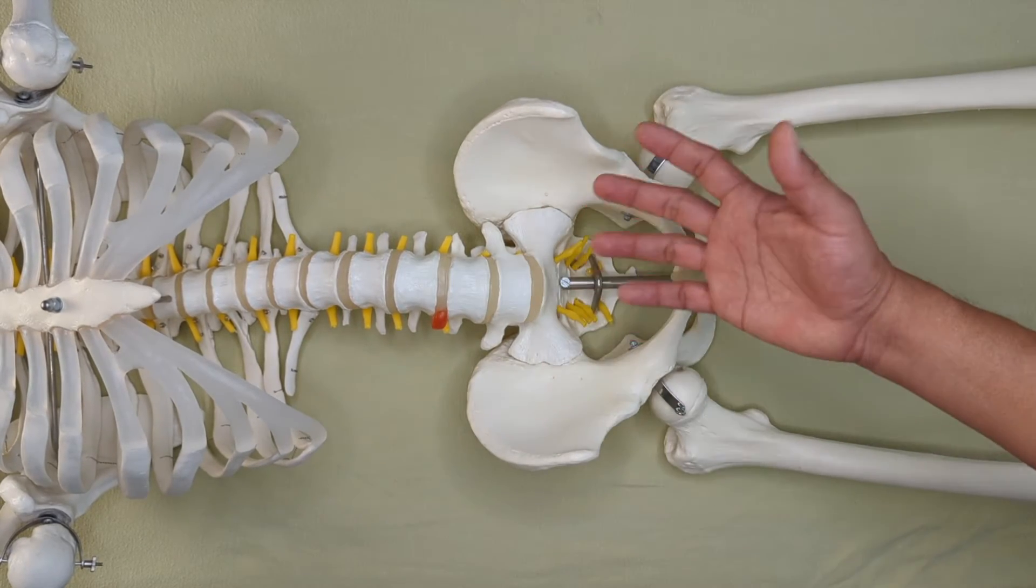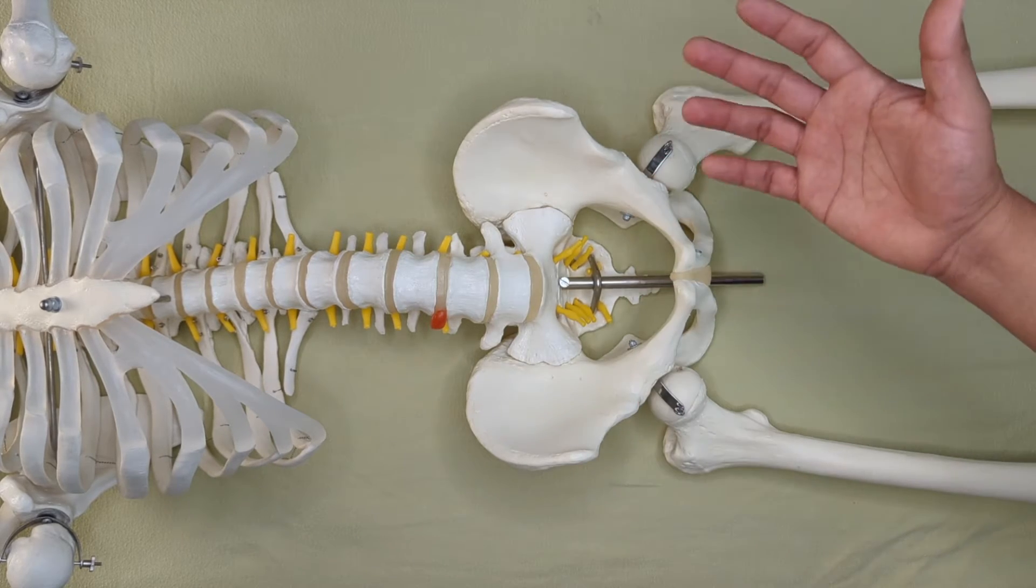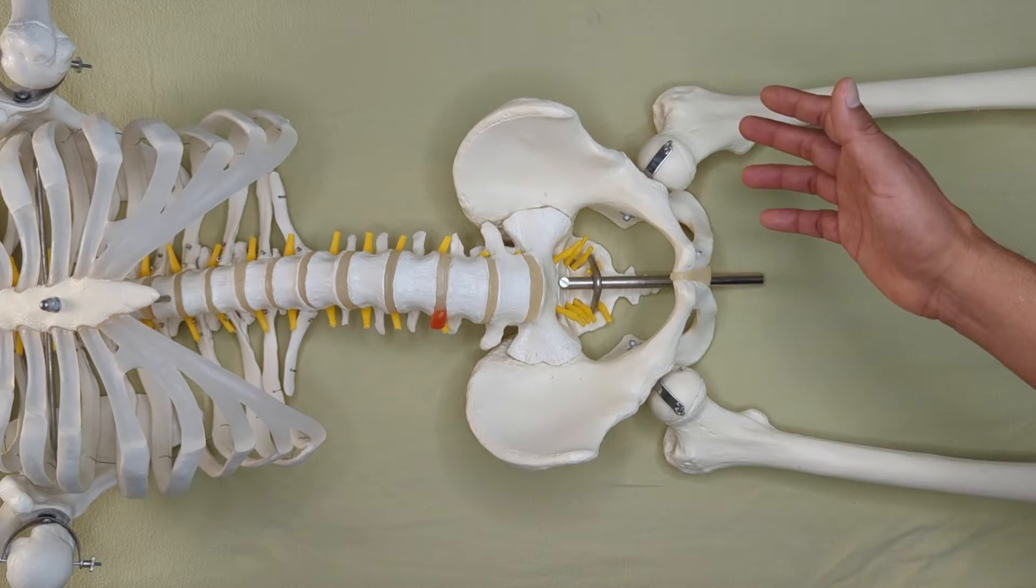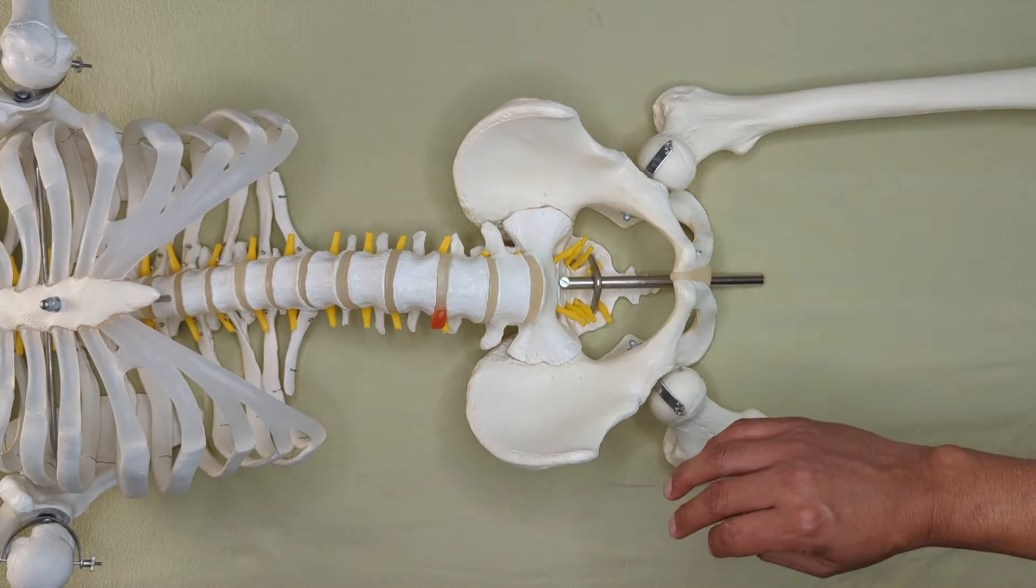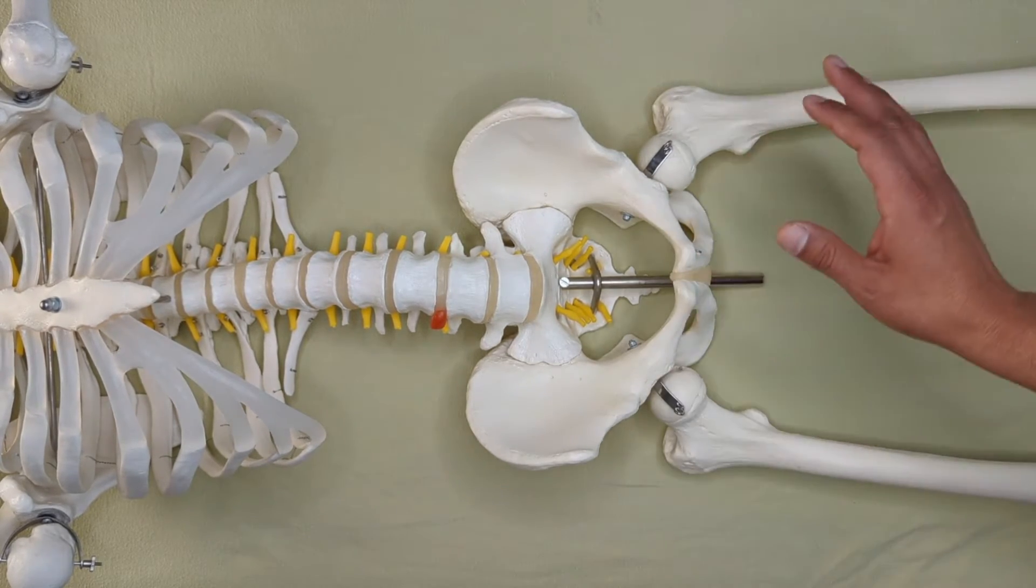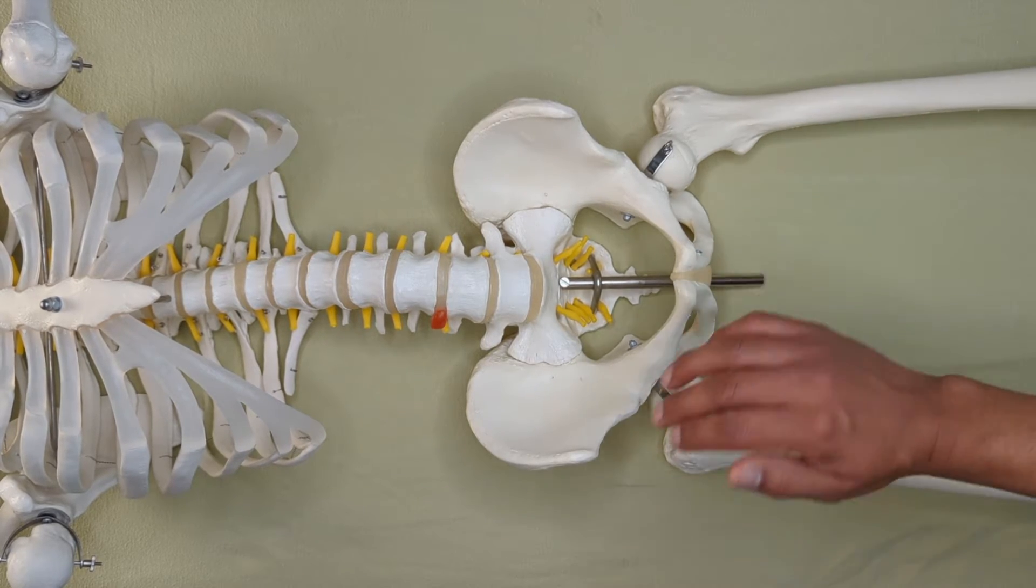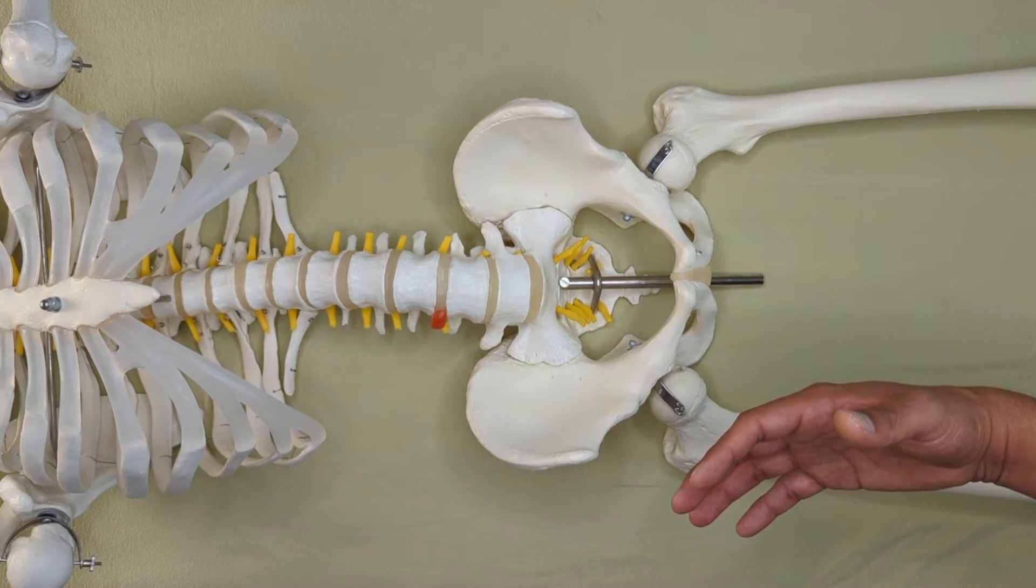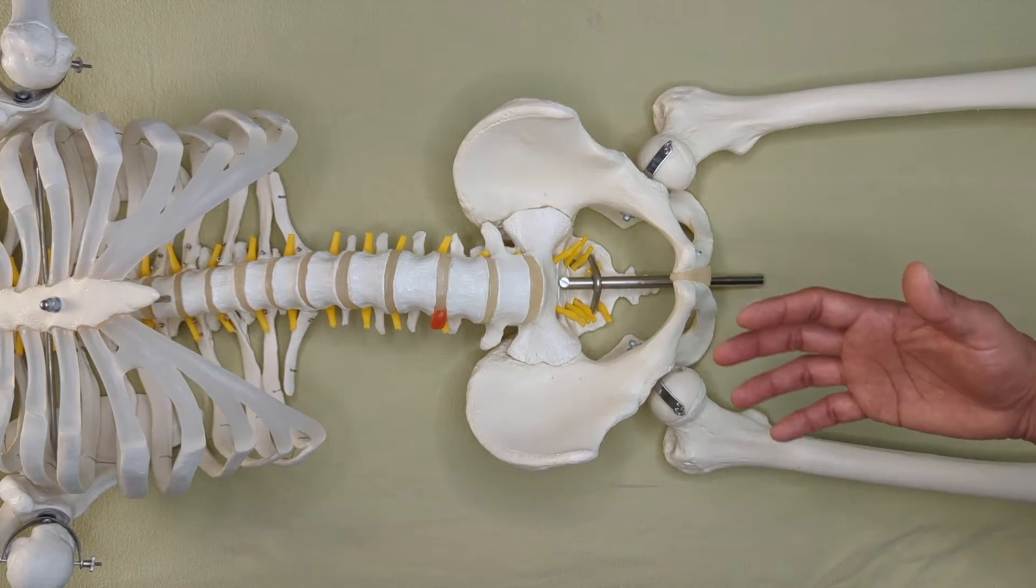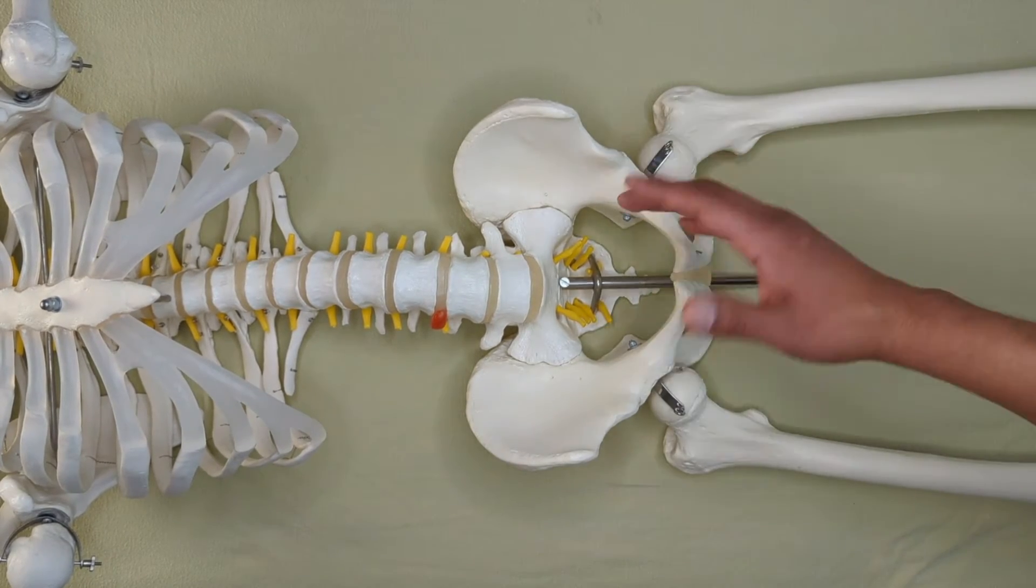And I let my client know that if at any point, even if they've agreed to the work, if at any point they're on the table and they're not comfortable with the work, they don't want it anymore, then that's perfectly all right. They can always stop or let me know however they want to let me know, and we can stop the work in the area. I think it's very important to let your client know this so that they feel comfortable in getting work in such an intimate area.